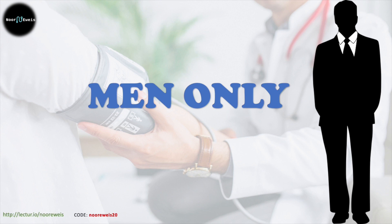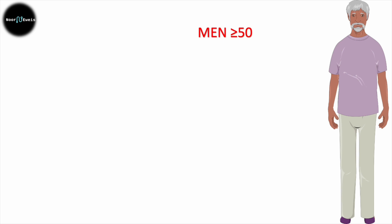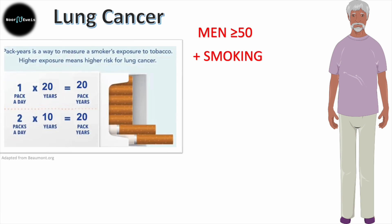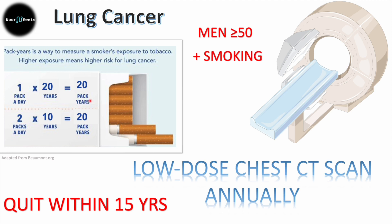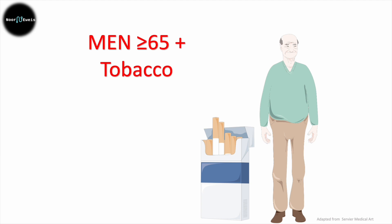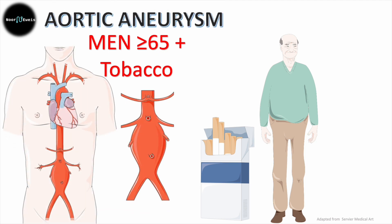Screening guidelines for men only always involve smoking. Men 50 and up who have smoked 20 pack-years or more — that's one pack a day for 20 years, or two packs a day for 10 years — who have quit within the last 15 years or are still smoking, must be screened for lung cancer with low-dose CT scan. If it's less than 20 pack-years, there's no need to screen. Finally, men 65 and up who have ever smoked, regardless of pack-years, must be screened for abdominal aortic aneurysm with an ultrasound once, and then we decide further based on the results.